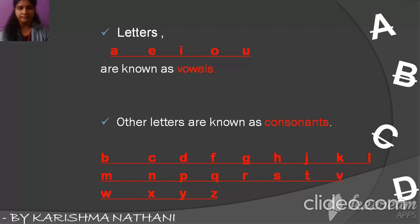For example, consonants include B, M, W, C, N, X, D, P, Y, F, Q, Z, G, R, H, S, J, K, V, and L.